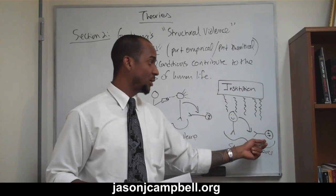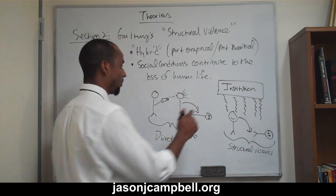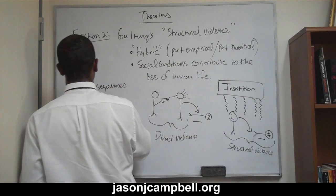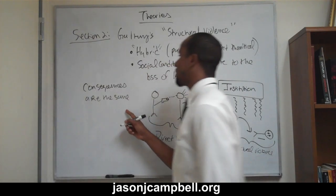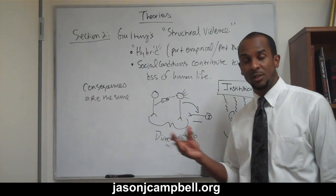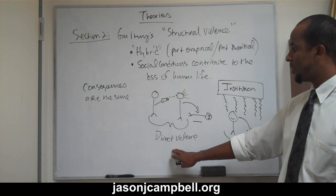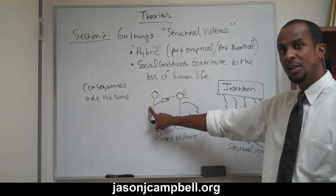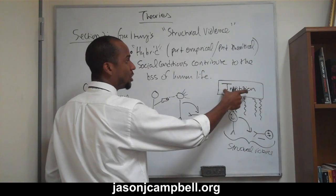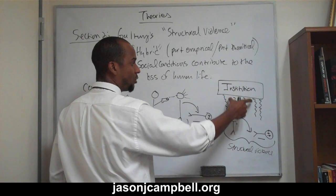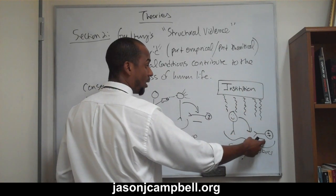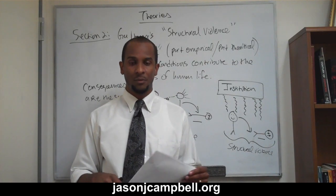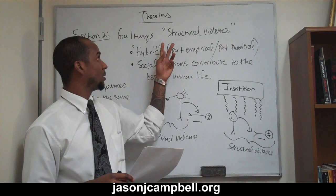Unbeknownst to you, however, there is a threat, and that threat is going to lead, just like in direct violence, to the same consequence. The consequences are the same in direct violence and structural violence — maiming, death, loss of life, and so on. When we're talking about direct violence, we recognize the threat immediately; we identify the agent of violence. Structural violence is different — the institution creates the condition for the death or maiming of individuals, but it's very, very difficult to identify the nature of the threat. This is why structural violence is a hybrid concept.